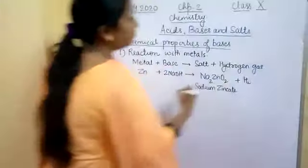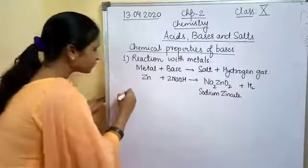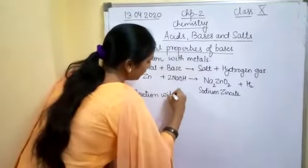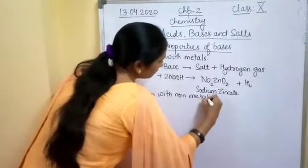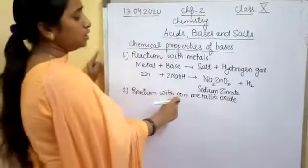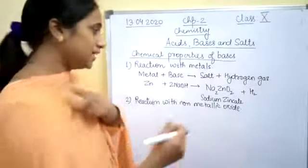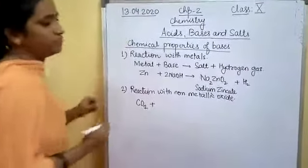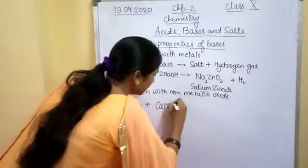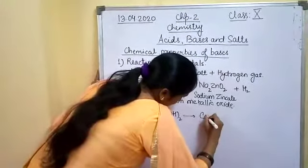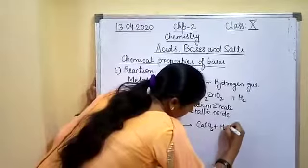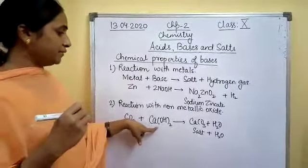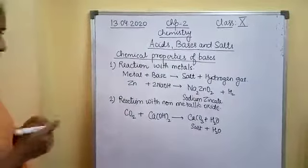The next reaction is the evolution of one molecule of hydrogen gas. The second reaction is: reaction of bases with non-metallic oxides. The nature of non-metallic oxides is acidic. For example, carbon dioxide (CO₂) reacting with a base — calcium hydroxide — gives calcium carbonate (CaCO₃) plus water. So salt and water are released when a non-metallic oxide reacts with a base.